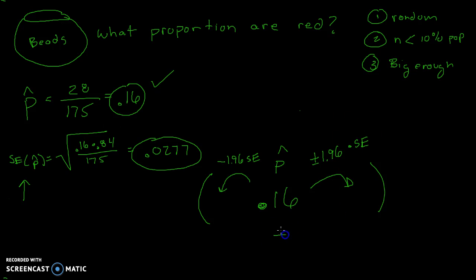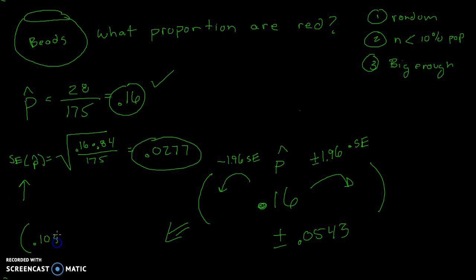This value is going to be my plus and minus 0.0543. If I take 0.16 and go down 0.0543, I get a low end of 0.1057. If I take 0.16 and go up 0.0543, I get the top end of 0.2143. So at the end of the problem, I'm 95% confident that the true proportion of red beads is somewhere between 10.57% and 21.43%.